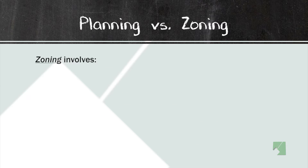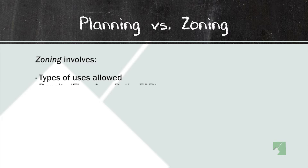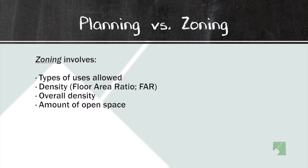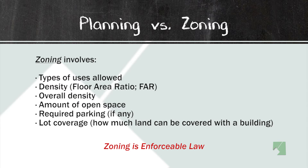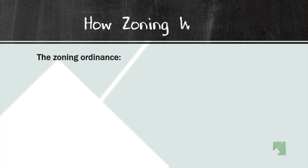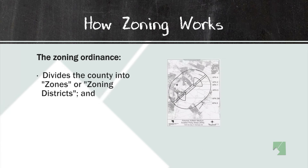Zoning is very different. It involves the types of uses that are allowed on property, the density, the overall density for an area, the amount of open space required when a project comes in, the required parking, and lot coverage. Zoning is regulatory, so it's enforceable law. The zoning ordinance divides the county into zones or zoning districts.